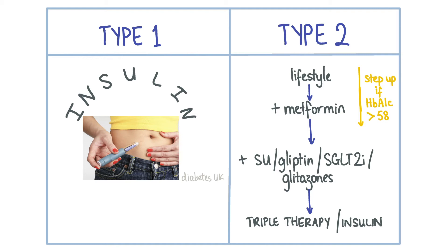Gliptins are DPP-4 inhibitors and work by increasing the secretion of incretin, which inhibits glucagon. They are associated with a risk of pancreatitis. Pioglitazone works by promoting fat and muscle glucose uptake. Side effects include weight gain, fractures and fluid retention. It is contraindicated in patients with a history of bladder cancer or heart failure.